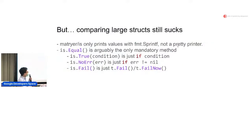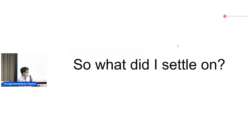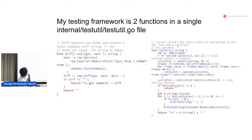But comparing large structs still sucks. It only prints values with sprintf. It's not a pretty printer. is.Equal is arguably the only one doing the real heavy lifting because is.True is just if condition, is.NoError is just if error not equals nil, and is.Fail is just t.Fail or t.FailNow.